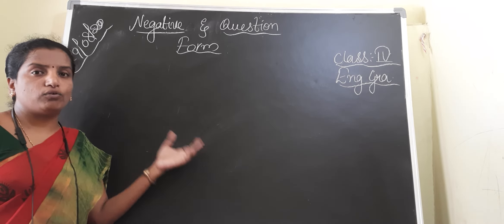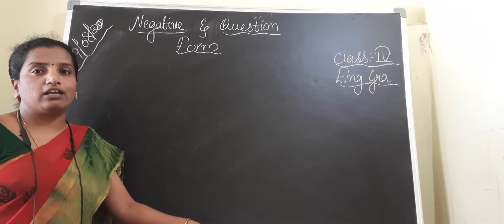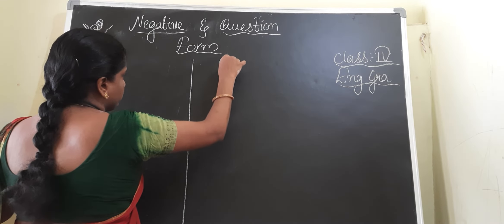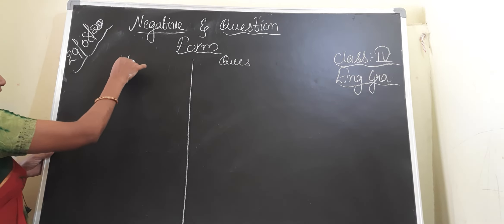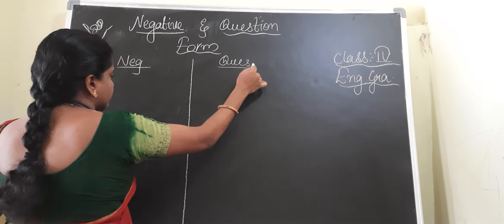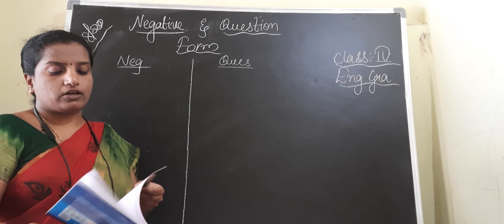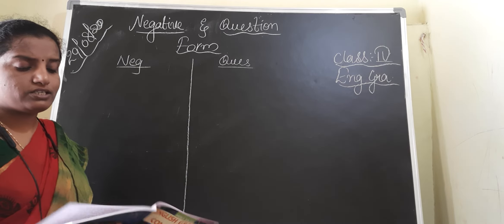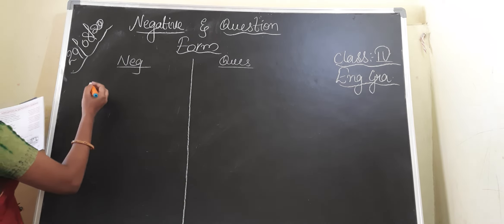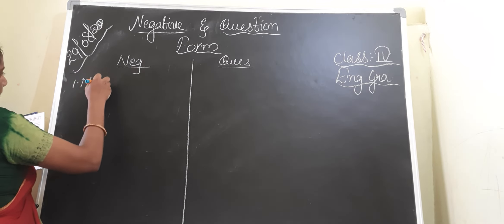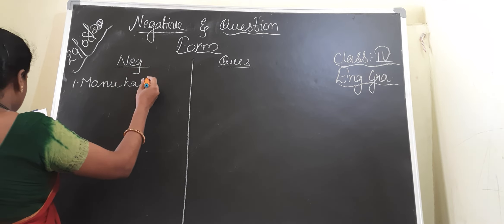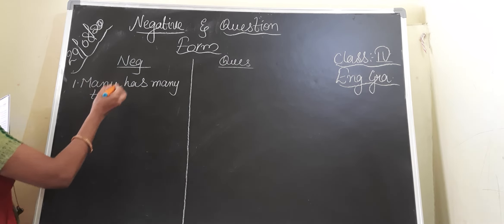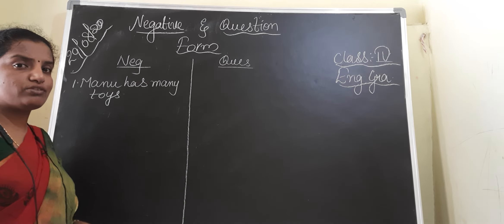Today again I will give you more examples to write the negative form. First I will discuss the negative form and then I will go for the question form — two things, one by one. I will write the statements on the board and then we will discuss one by one. Very easy topic, but if you revise more you will be perfect in this. So this is a statement, and for this we have to write the negative form as well as the question form.